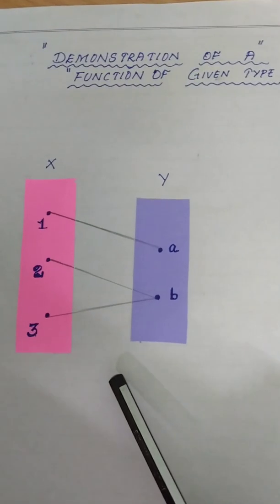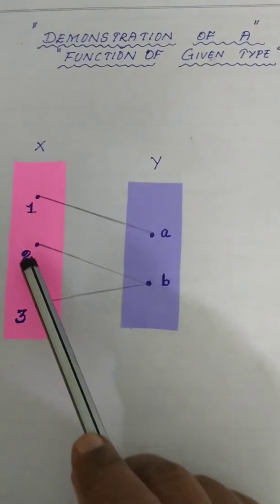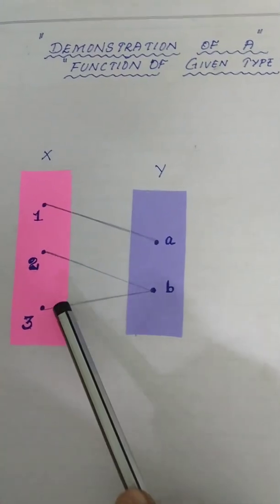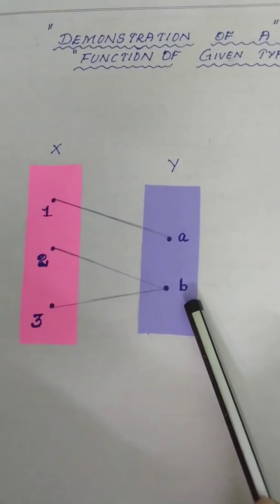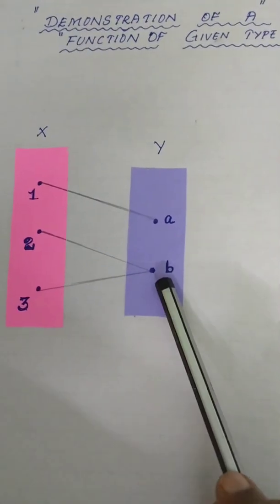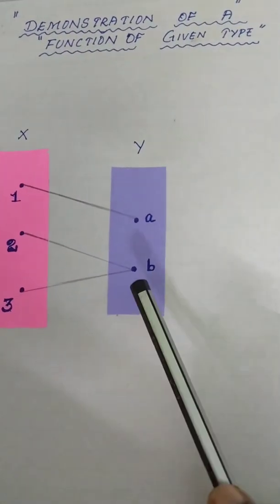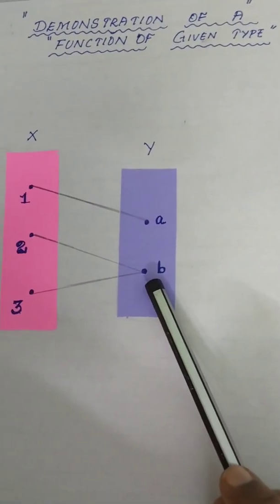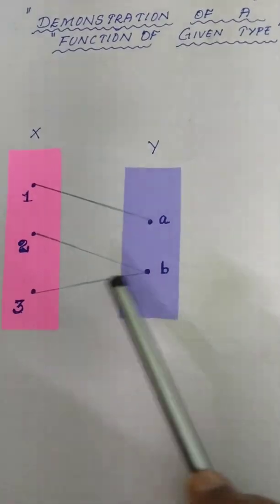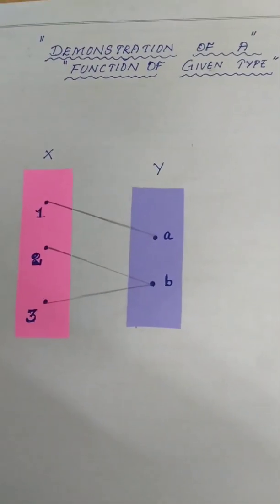It should not be one-to-one. Here, we will be noting that 2 and 3 both are having the same image. So it is not one-to-one — it is actually a many-to-one function. As both the elements of the co-domain, a and b, are having images, so it is an onto function.